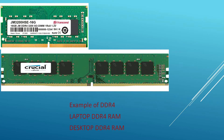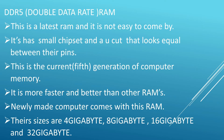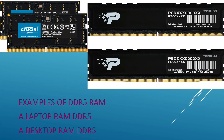DDR5 is the latest RAM and is not easily found. It has small chipsets and a U-notch that looks equal between the pins, though they are actually not equal. This is the fifth generation of computer memory — it is faster and better than all other RAMs. Newly made computers come with this RAM. The sizes are four gigabytes, eight gigabytes, 16 gigabytes, and 32 gigabytes. The longer module is for desktop and the shorter one is for laptops.